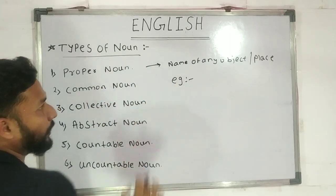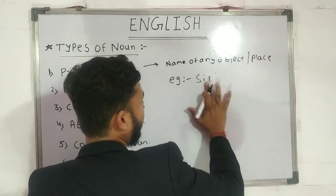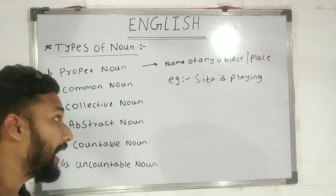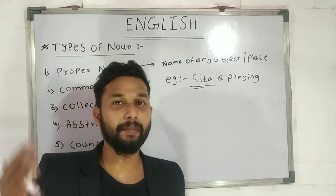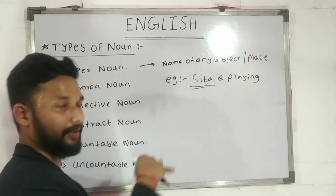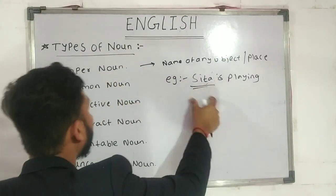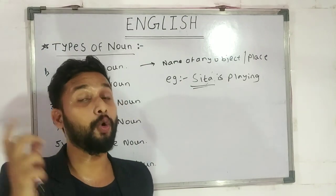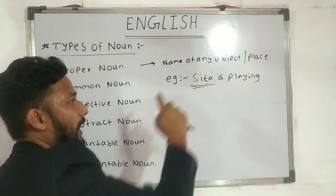Let's talk about proper nouns with an example. In English, 'Sita is playing.' Sita — we don't know if it's a girl or a boy, but we are talking about someone's specific name. So, Sita is a proper noun, because it is specifically the name of a person. When a name is specifically mentioned, we call it a proper noun. This is the first type of noun.